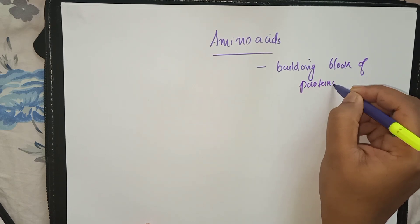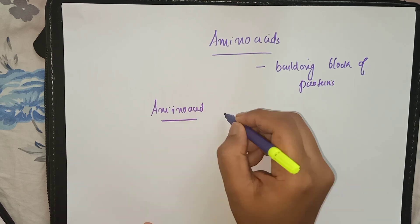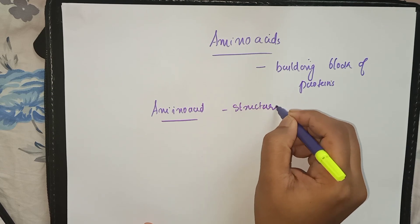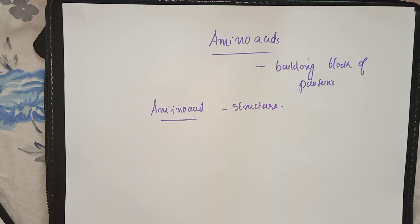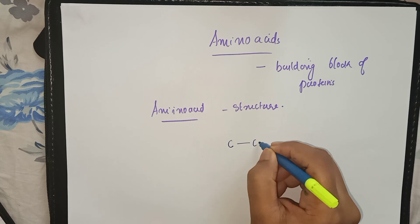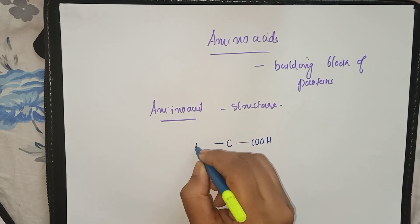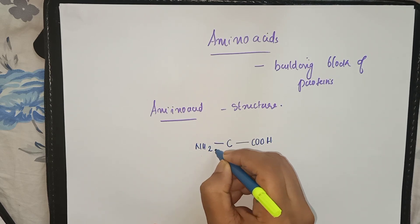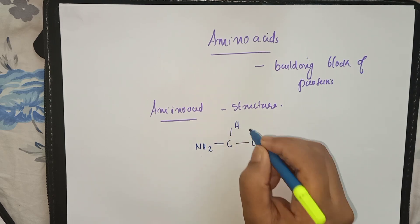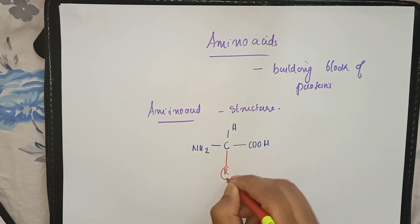Looking at the basic structure of an amino acid: it has a central carbon atom to which a carboxylic acid group is attached, and an amino group is also attached, along with a hydrogen atom. The fourth valency is occupied by a variable side chain, denoted as R.